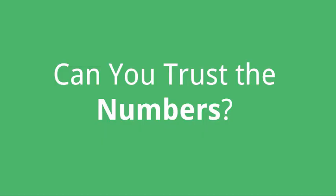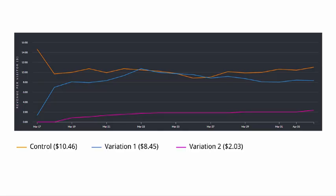The first thing we want to look at is a technical issue: can you even trust the numbers you're seeing in your testing tool? Here's an example of a test I ran not long ago. The conversion goal is a product purchase, and we're measuring revenue per visitor for each test version. The control is making $10.46 per visitor, variation one $8.45 per visitor, and variation two $2.03 per visitor. This was run for 16 days with about 120-something conversions.